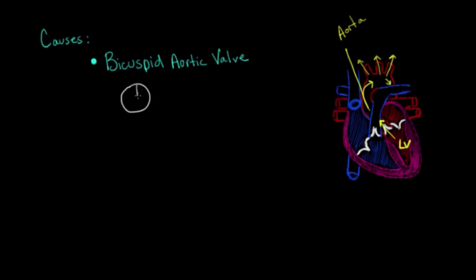So let's demonstrate this here. Normally, the aortic valve has three cusps. So I'm going to label those one, two, and three. But a certain portion of the population actually has a congenital bicuspid aortic valve, only having one and two cusps.